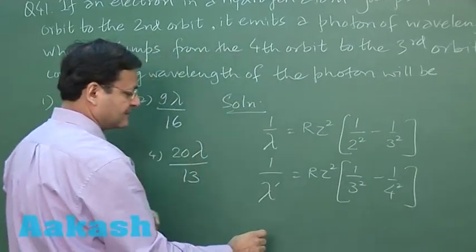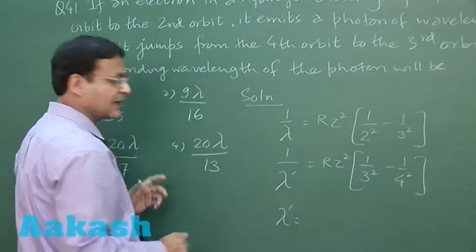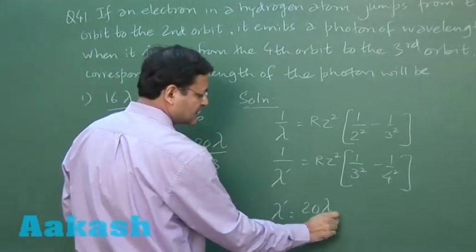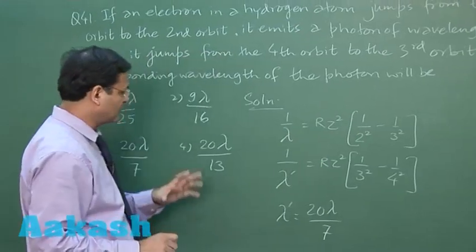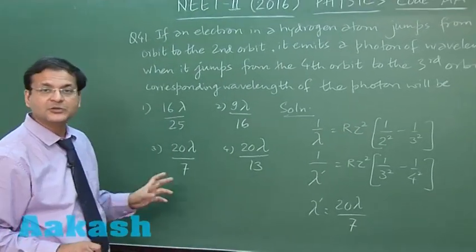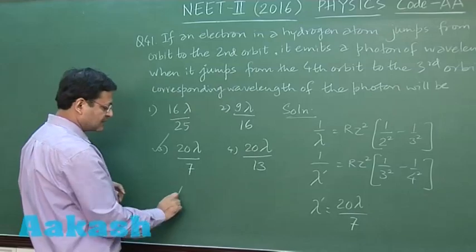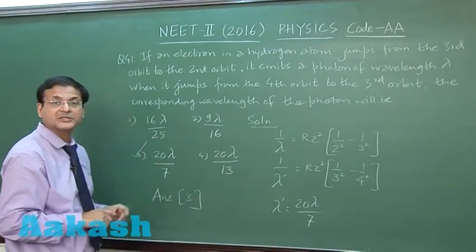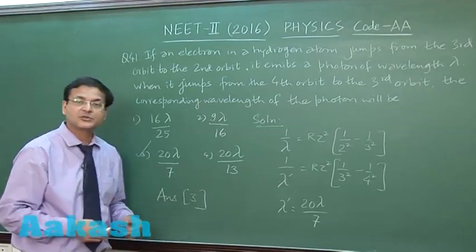λ' you have to calculate, so dividing will give you the value 20λ/7. You have to look for this kind of option, that is option 3. I will be marking answer 3 for question number 41. Now let us switch over to the next question, that is question 42.